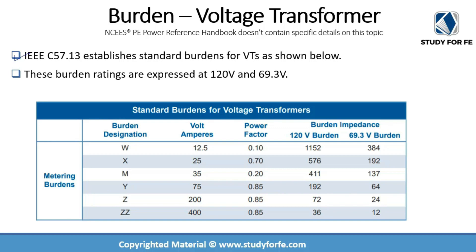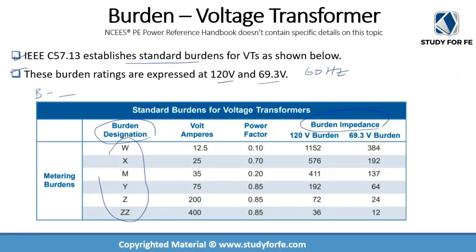IEEE standard C57.13 also establishes standard burden ratings for voltage transformers, shown in the table on this slide. These ratings are expressed for standard voltages of 120 volts and 69.3 volts at 60 hertz. The burden designation for voltage transformers is alphabetical, as opposed to the B-impedance format for CTs. For example, a VT with burden designation W has an impedance of 1,152 ohms, and burden designation M has a 69.3-volt burden rating of 137 ohms.